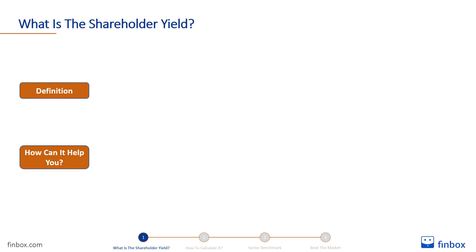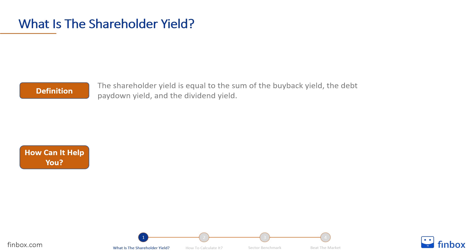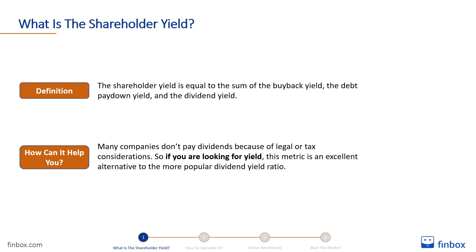The shareholder yield is a financial metric that gives investors a complete picture of how the company uses its cash flow to reward shareholders. Instead of focusing on dividends alone, the shareholder yield also considers the buyback yield and the debt paydown yield. Dividends are just one way in which companies can reward their shareholders, and many decide to use their cash flow differently because of legal or tax considerations. So if you are looking for yield, this metric is an excellent alternative to the more popular dividend yield ratio.